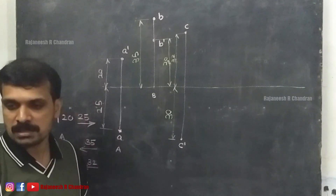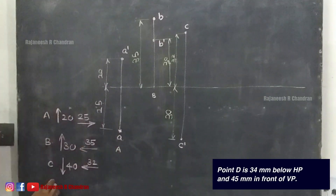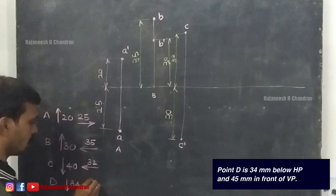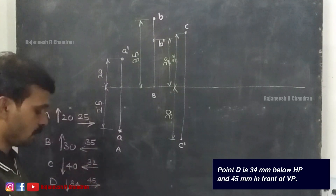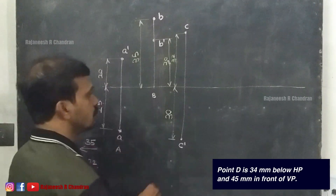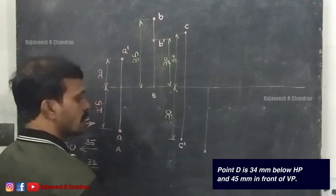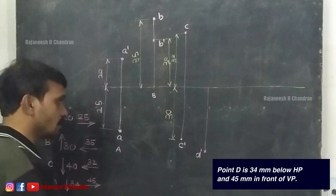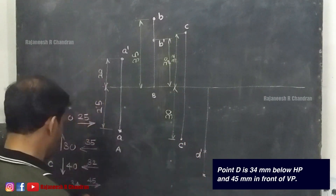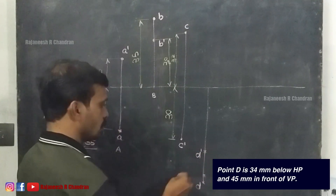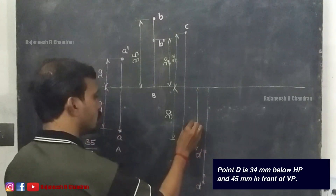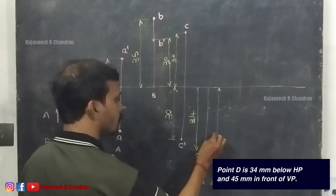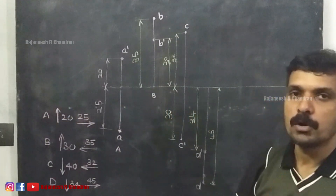The fourth question: point D is 34mm below HP and 45mm in front of VP. Point D is 34mm below HP — below the XY line — name it D dash. 45mm in front of VP means below the XY line — name it D. This distance will be 34 and this distance will be 45. I hope all of you have understood the four questions.